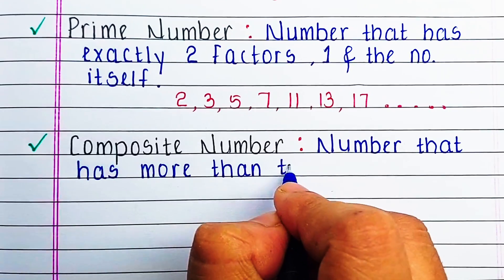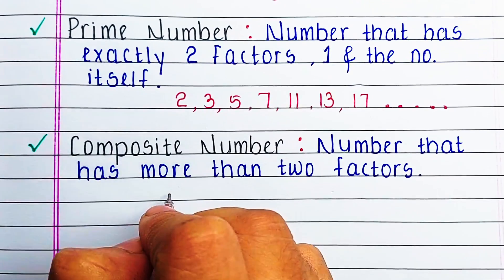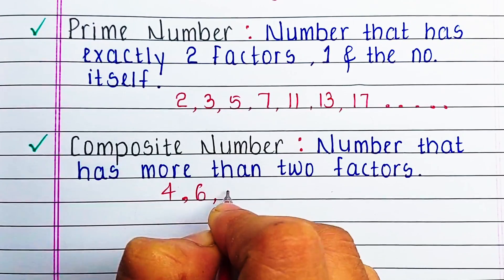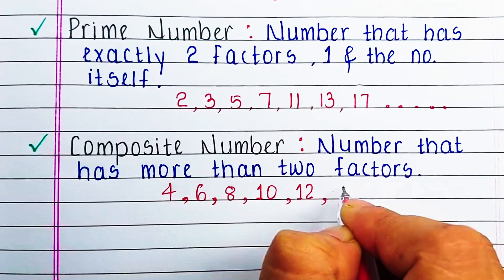Next is composite number. The numbers that have more than two factors are known as composite numbers. For example, 4, 6, 8, 10, 12, 14, etc.